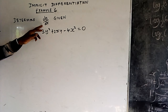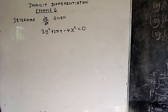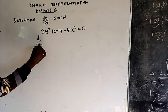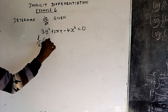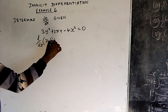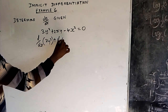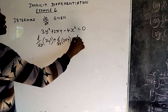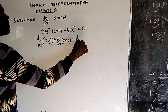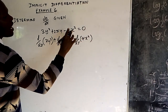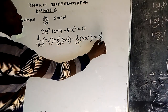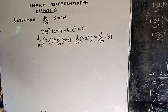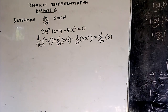For us to differentiate everything with respect to x, we introduce d/dx. So what is the derivative of 3y² with respect to x? What is the derivative of 2xy with respect to x? What is the derivative of 4x² with respect to x? What is the derivative of 0 with respect to x? You introduce d/dx on both sides of the equation.